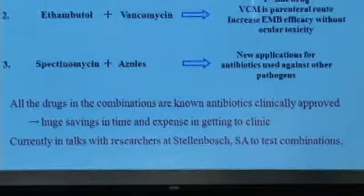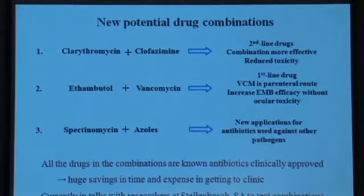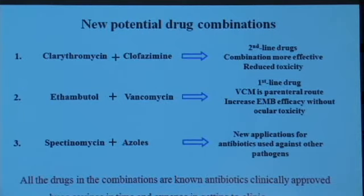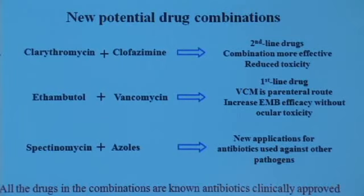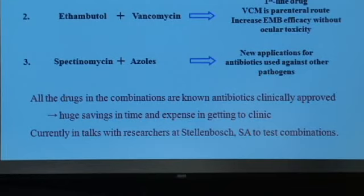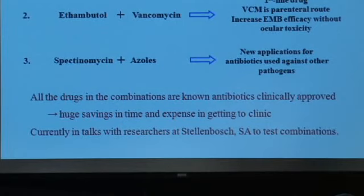What's particularly promising about this approach is that in their initial screens, they use drugs or antibiotics that have already been clinically approved. This results in huge savings in time and expense in getting these compounds to use in the clinic. In fact, Charles and his collaborators here are currently in talks with researchers at Stellenbosch in South Africa to test these various combinations that they've identified here at UBC.